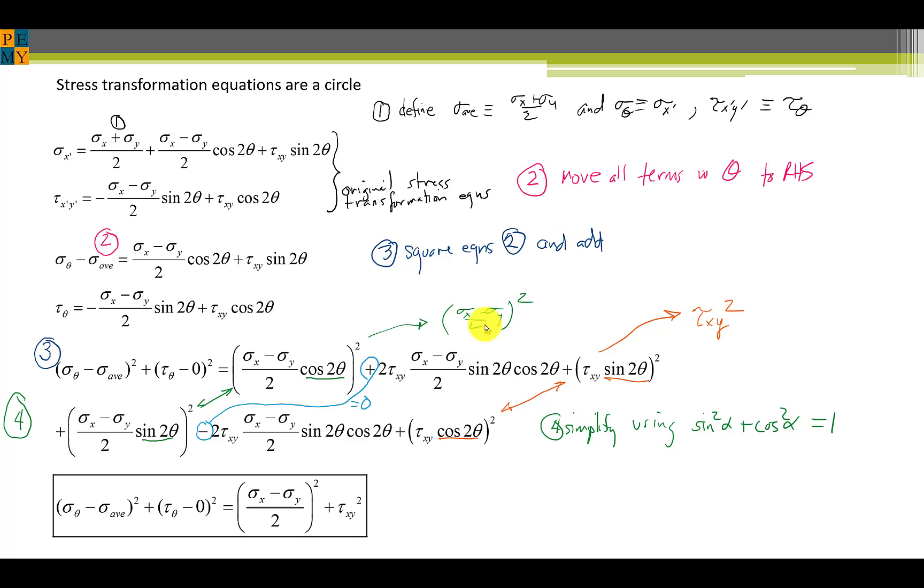So you will notice here that these two terms are multiplied by sigma x minus sigma y divided by 2 times cosine squared 2 theta plus sine squared 2 theta. That's 1, so that this becomes sigma x minus sigma y over 2 squared. The plus and the minus for these two terms, which are identical, completely cancel out these middle terms. And then for the last two terms, we have tau xy sine squared of 2 theta plus tau xy cosine squared 2 theta. And using this formula, this becomes tau xy squared.